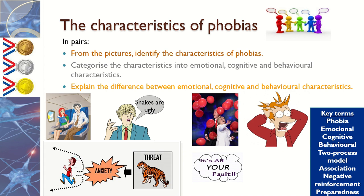Have a think about the pictures shown and see if you can categorise the characteristics of each phobia into emotional, cognitive, or behavioural. You might want to pause the video to have a go first. The person on the plane is an example of endurance — a behavioural category. They might be terrified of flying but have to endure it because they need to travel. For the snake image, you might have said it's an example of cognitive distortion — seeing them as completely ugly and horrific, perceiving them differently.